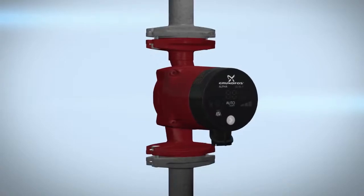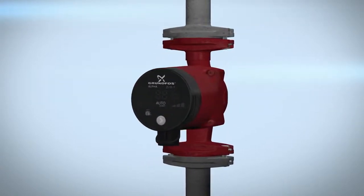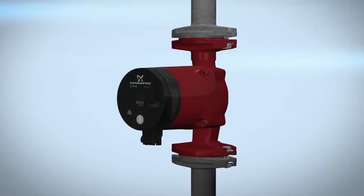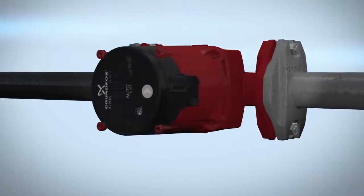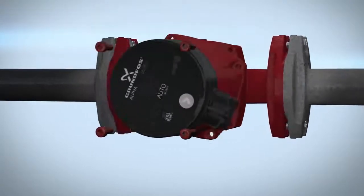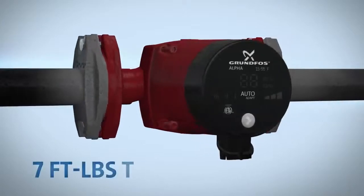No fluid should be present in the circulator pump when changing the pump head orientation. To change the orientation of the pump head to your desired position, remove the four millimeter screws and turn the pump head. Insert and cross tighten the screws to seven foot pounds torque.